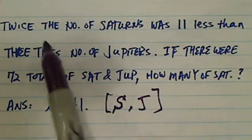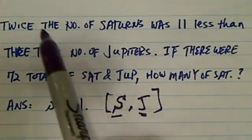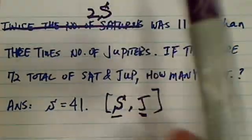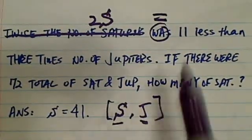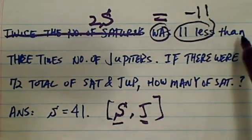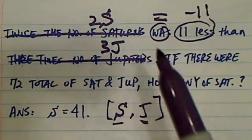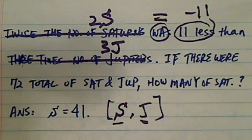Next, what you want to do is really just drag those two variables through the equations, literally. Twice the number of Saturns, well that's 2S, right? Was means equal, 11 less means minus 11. Then 3 times the number of Jupiters, 3J. So from the first sentence, you already have an equation. 2S is equal to 11 less, that's from 3J.